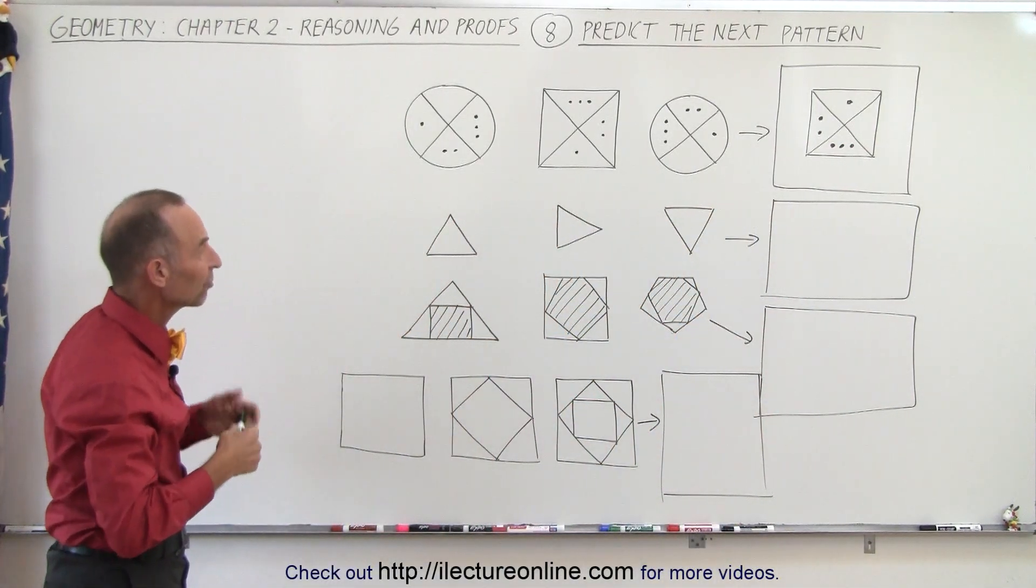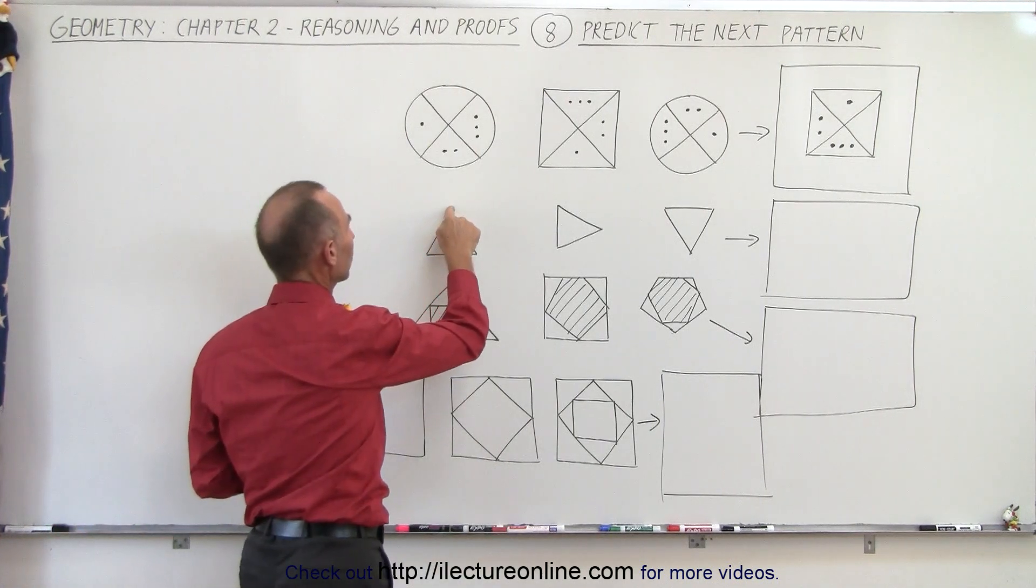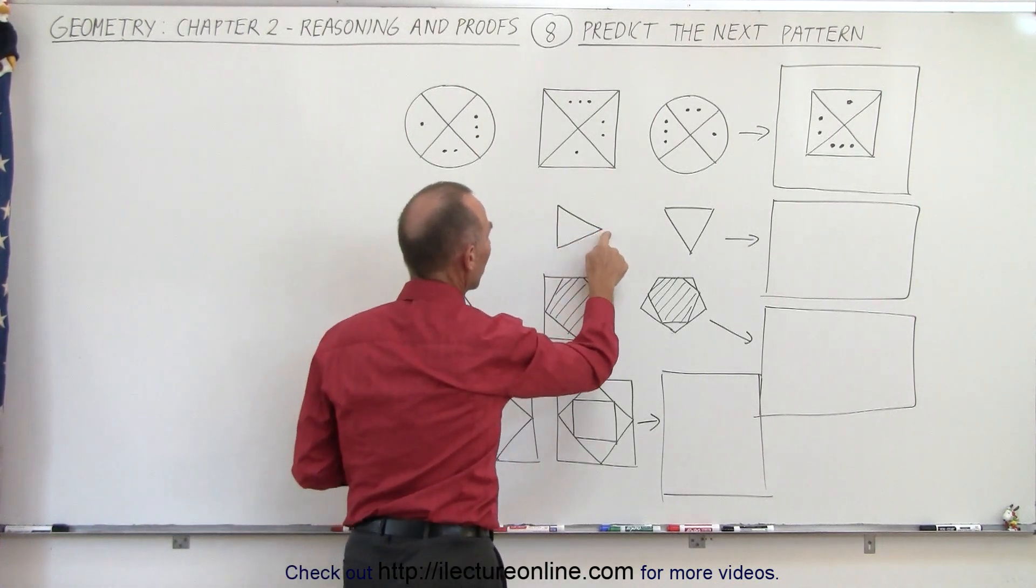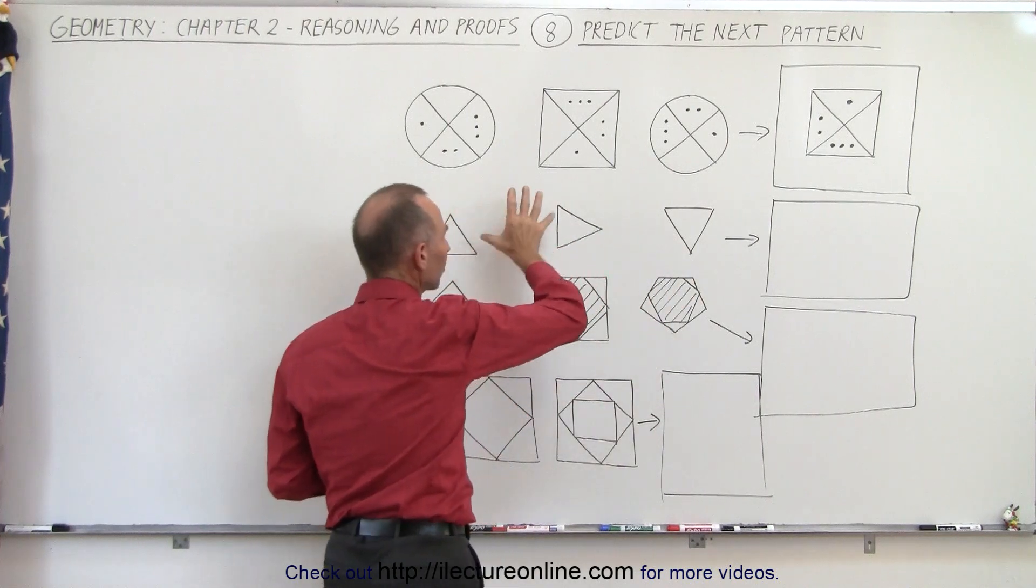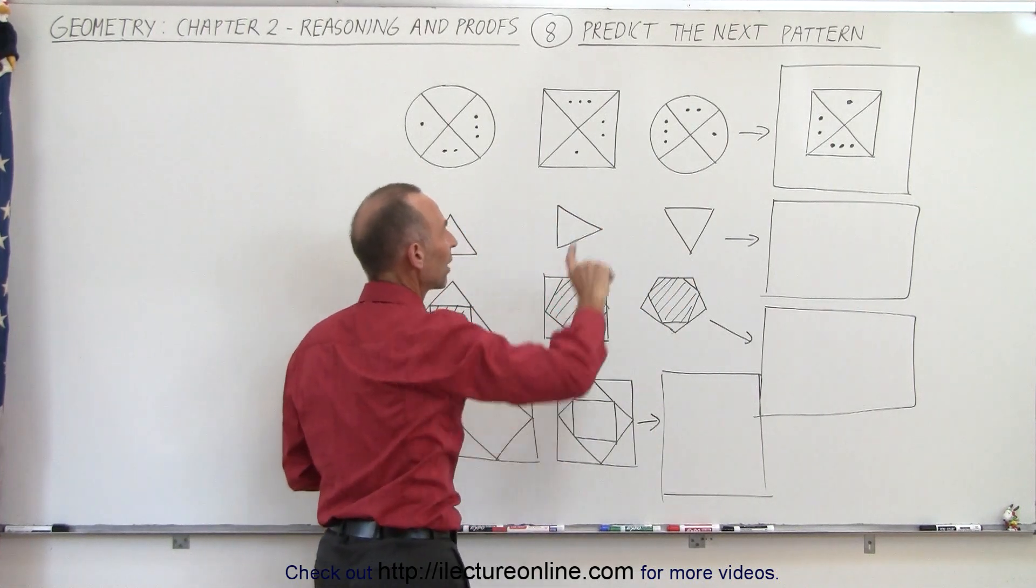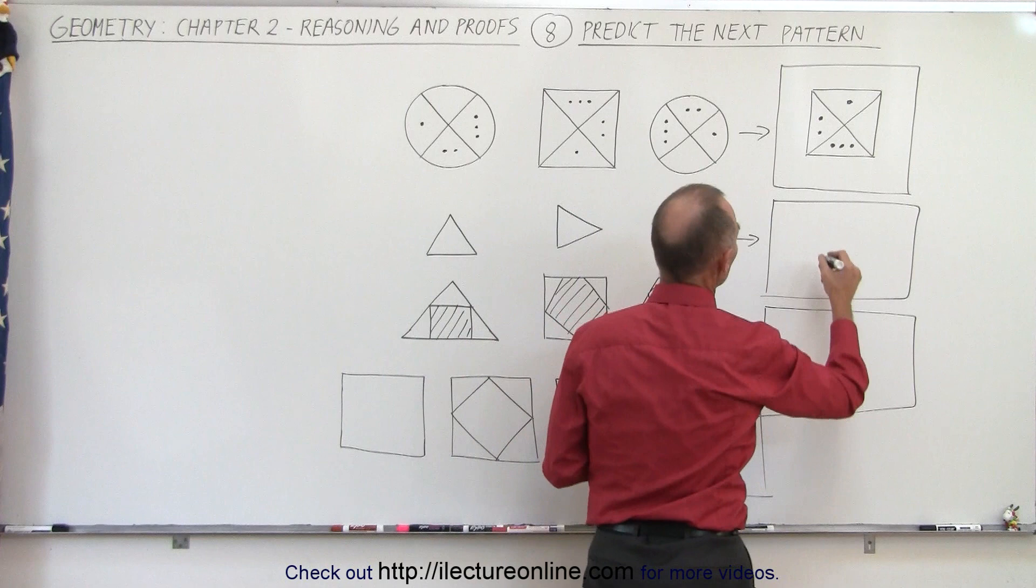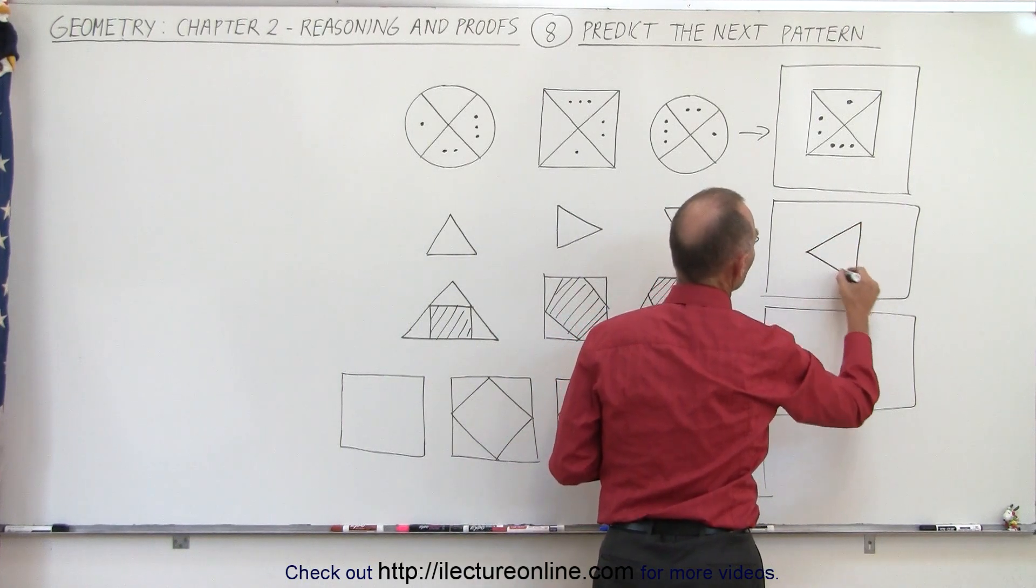On the next set we have triangles. Notice that the point here is pointing up, then it's pointed to the right, then it's pointing down, so it looks like it's rotating in a clockwise direction. Assuming that pattern holds, then the next one would have to be like this.